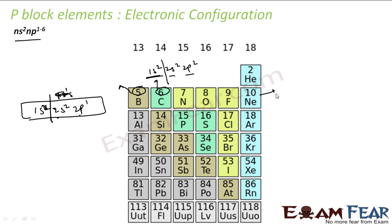Similarly, if you talk about neon, 1s2, 2s2, 2p6. So if you ignore this part, the electronic configuration is ns2, np6. That is my typical electronic configuration for P-Block elements.